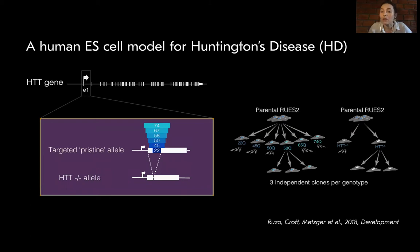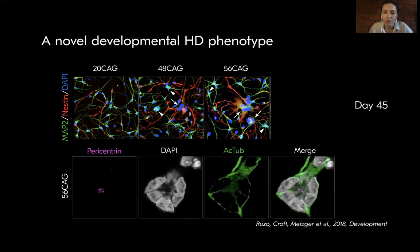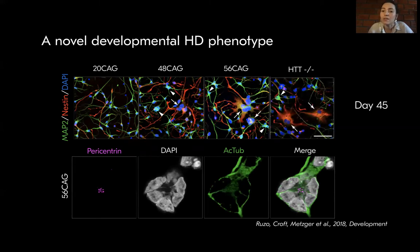To understand the normal function of Huntingtin, we also generated a knockout. When we previously differentiated these ES cells into cortical neurons, an abnormal cellular phenotype appeared in the CAG-expanded cell lines, characterized by multinucleation and defective cellular polarization at day 45 of differentiation. Interestingly, the Huntingtin knockout phenocopied the CAG-expanded cell lines, making it consistent with a loss of Huntingtin function rather than the broadly accepted gain of toxic function hypothesis.